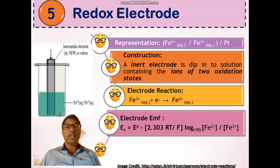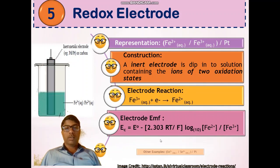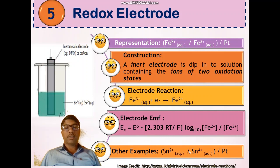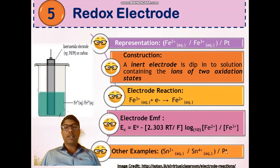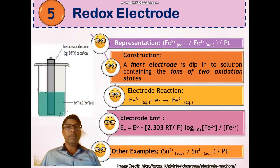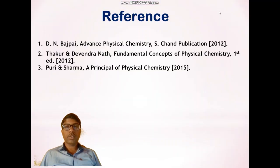Another example of a redox electrode is the stannous-stannic ion electrode, where platinum also serves as the inert electrode and the construction is the same. These are the references. Thank you.